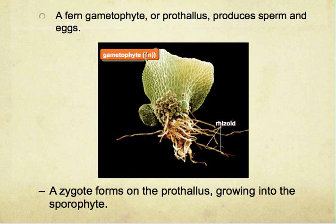This is a gametophyte, which means it is a haploid cell — since it's one N, it's a haploid cell. It grows on the prothallus, which then grows into the sporophyte.